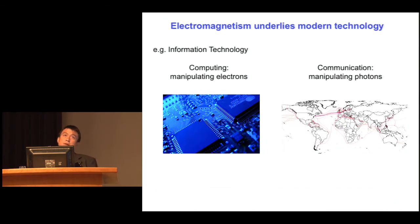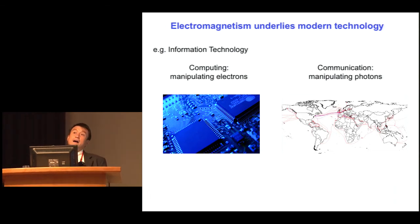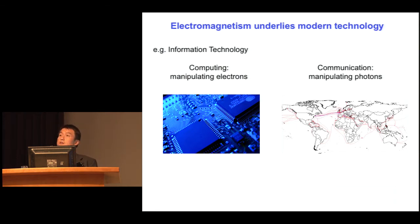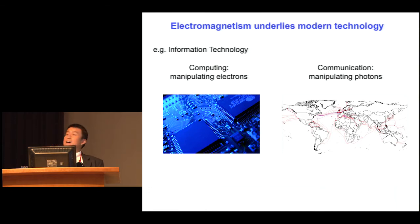The subject matter of electromagnetism really underlies modern technology. When we think about computing, we are actually manipulating electrons in our computer. And when we think about communication — for example, the global information infrastructure, the internet — we're actually communicating through light. The capability of controlling both electrons and controlling light really underlies information technology. You heard a fascinating discussion yesterday about some of the implications of these technologies in the artistic world.